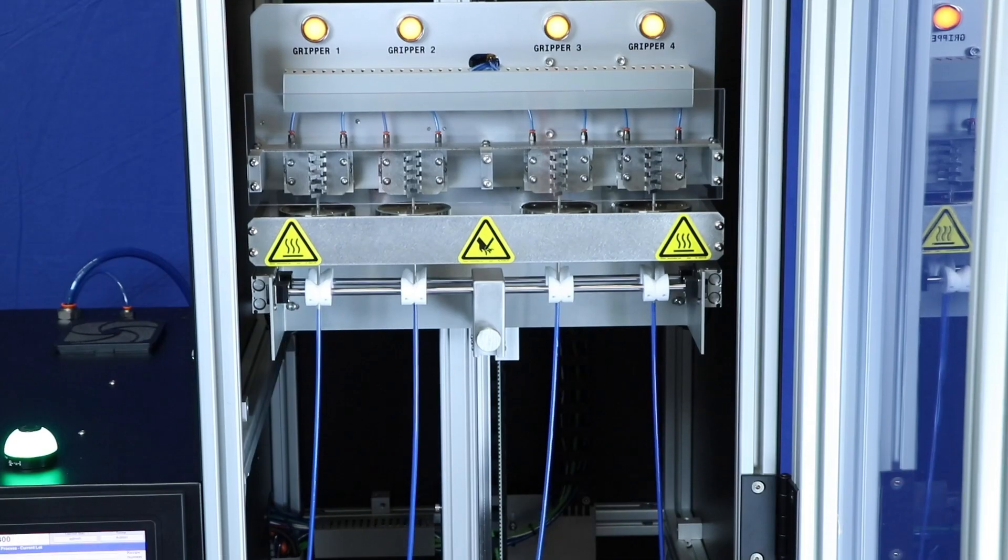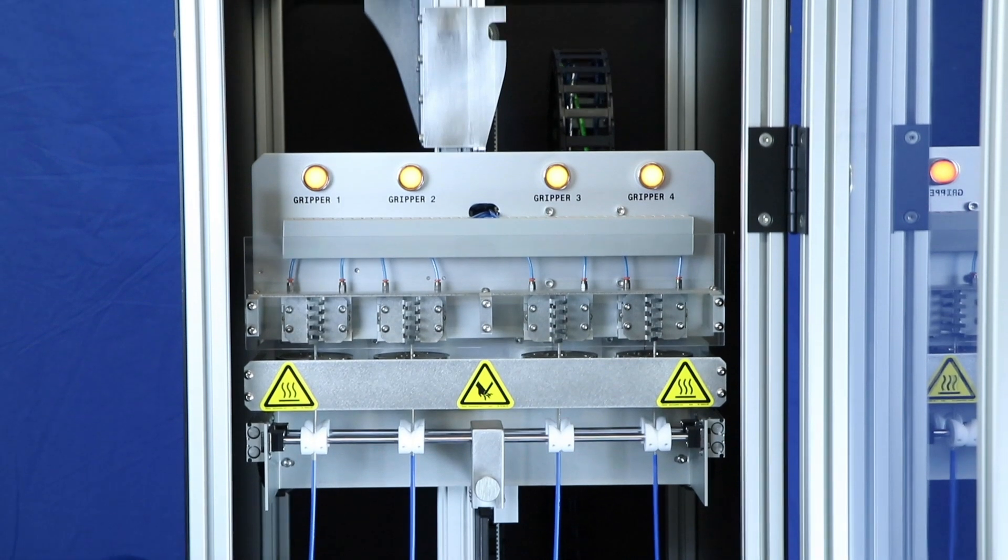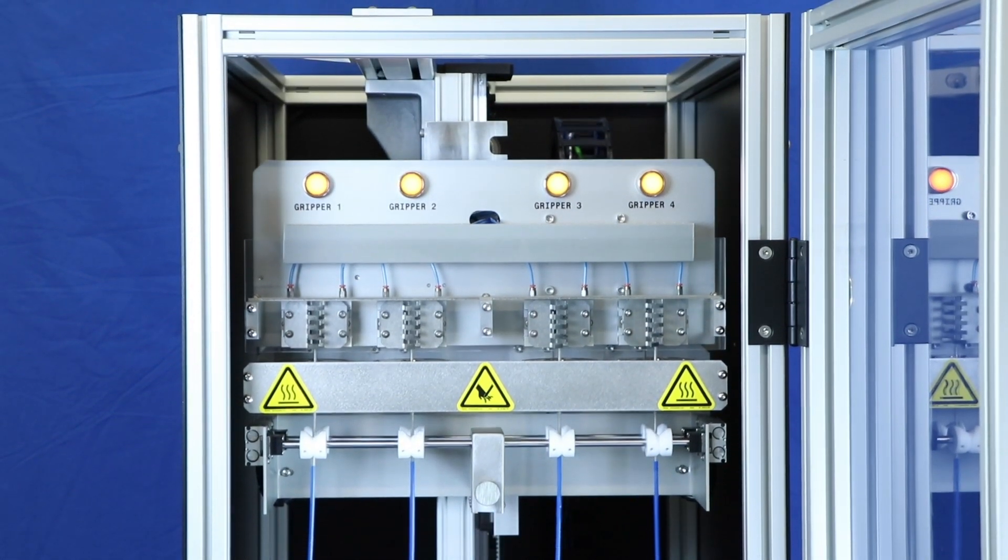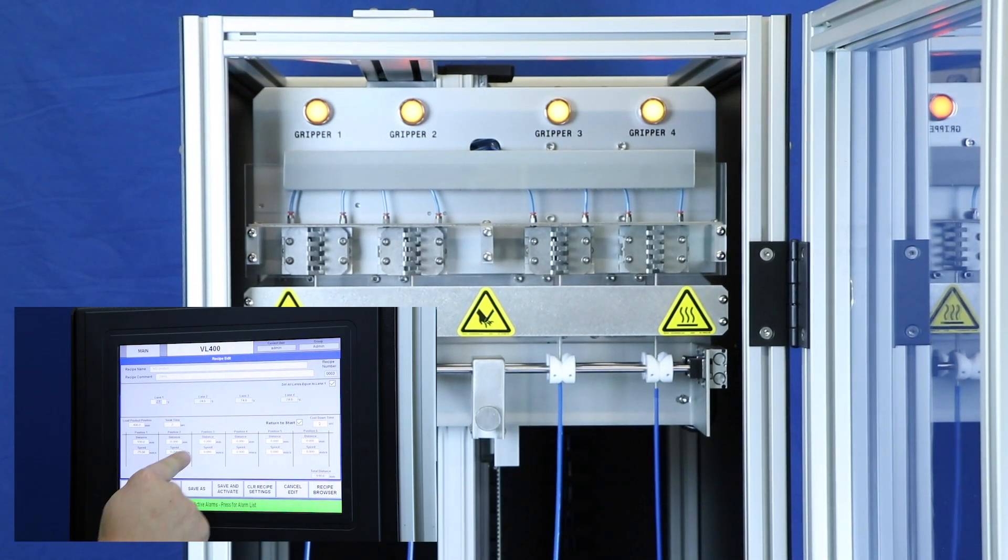Next, the gripper rack jogs to the original starting position, locking the gripper assembly in place, and the operator selects desired recipe settings and begins the cycle by pressing start.